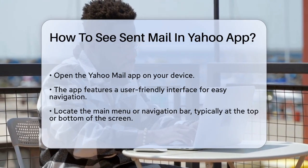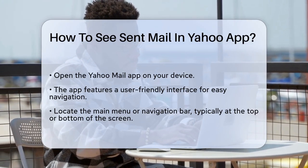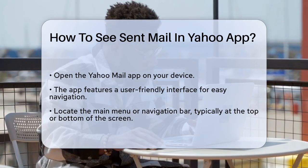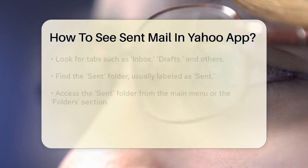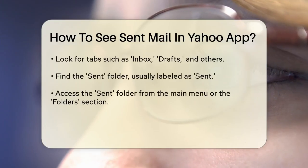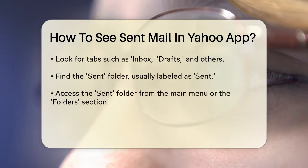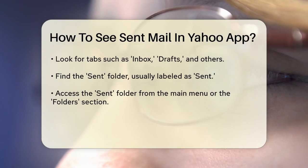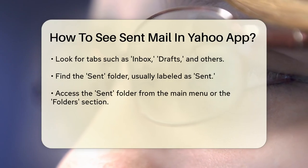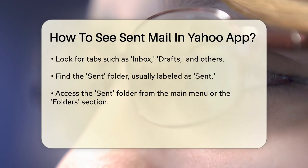Here, you'll see several tabs like inbox, drafts, and more. To see your sent emails, you need to find the sent folder. In the Yahoo Mail app, this folder is typically labeled as 'Sent' and can be found in the main menu or under the folders section.